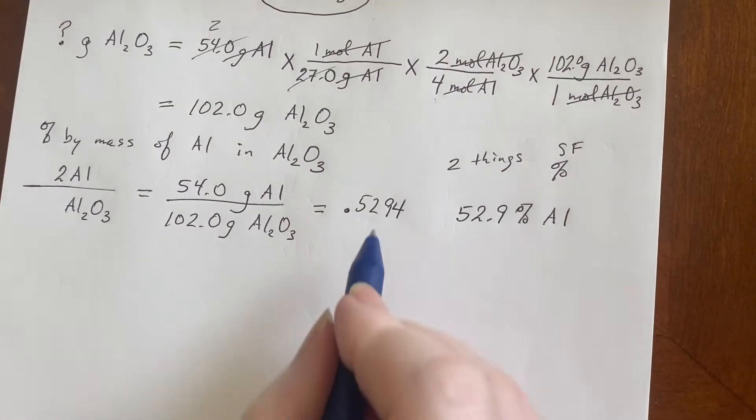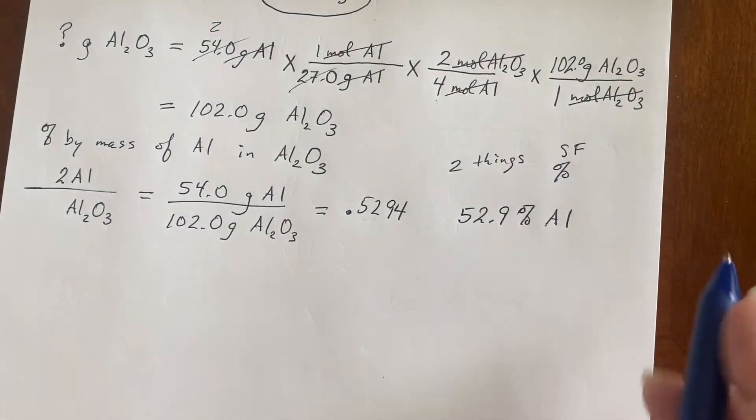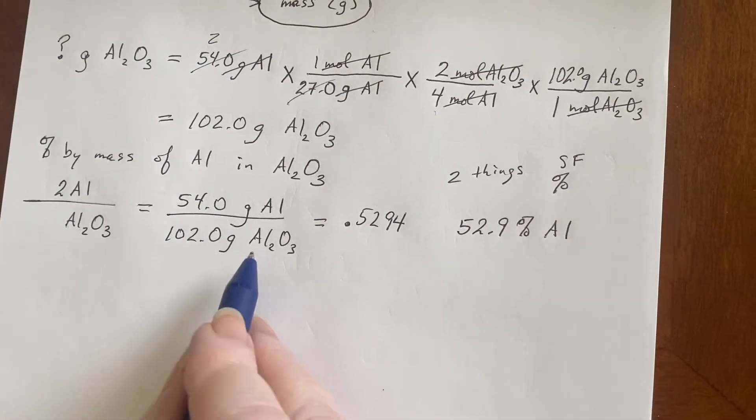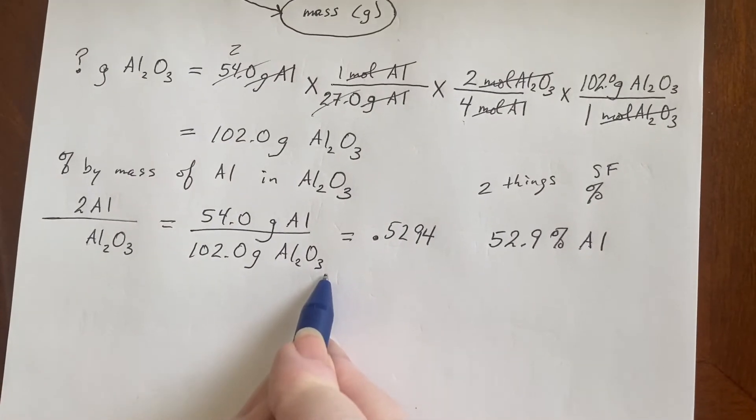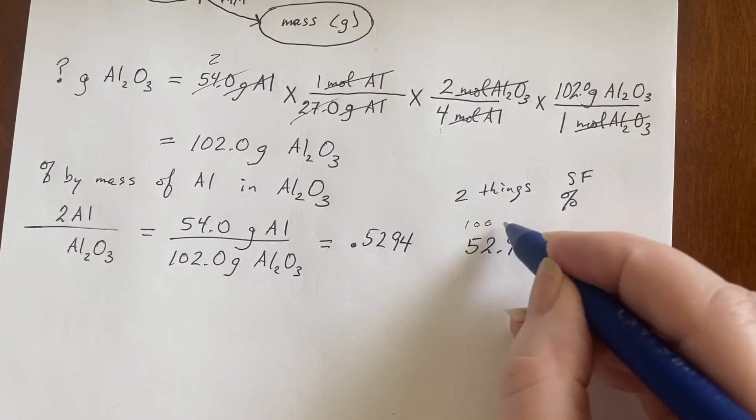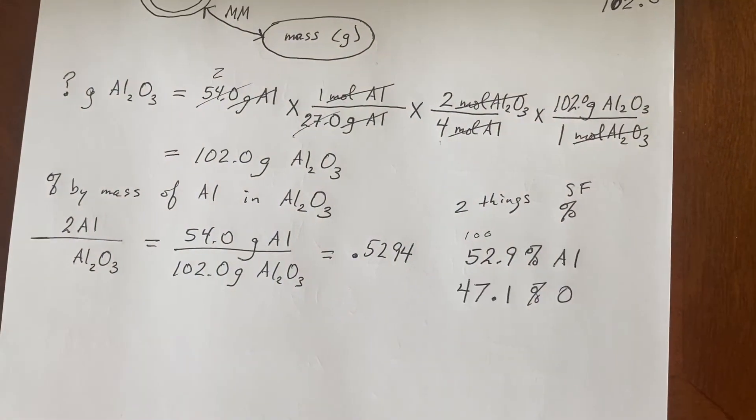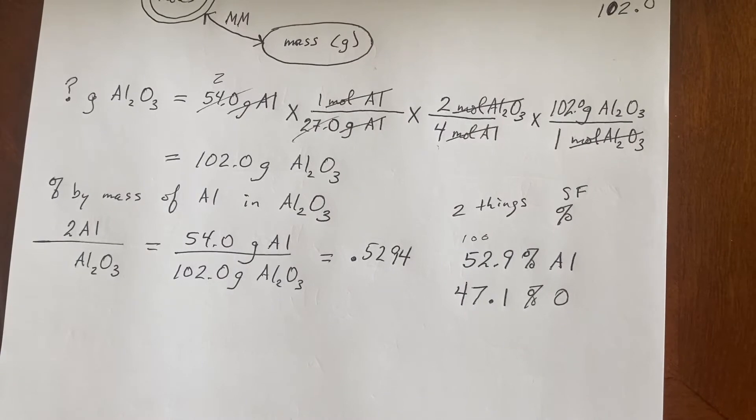So I need to change it into a percentage. So I'm doing two things, working with the sig figs and I'm turning it into a percentage. 52.9, even though I'm getting rid of the four. The four is gone because of the sig figs. I can go ahead and say, because the only other thing in aluminum oxide is oxygen, I could just say, let me subtract from 100 and I can find out what the percent of oxygen is.